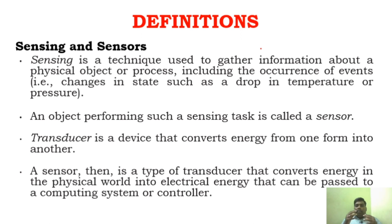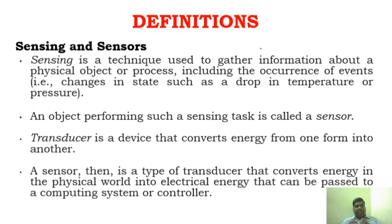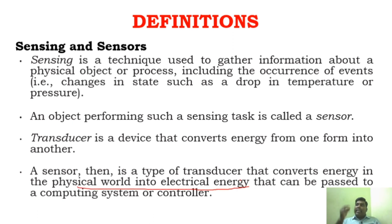A transducer is a device which converts one form of energy into another form. What a sensor does is it senses and gathers information. For example, if you want to measure the temperature of your body, you use a thermometer — a temperature sensor. It senses the temperature and converts that physical element into a signal so that we can measure that particular temperature. So, a sensor converts a physical quantity into a signal which can be measured. That is why it is also called a transducer — it transforms from one form to another. It converts energy from the physical world into electrical energy which can be passed to a system to be measured or analyzed.